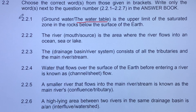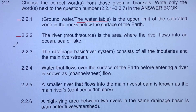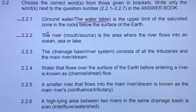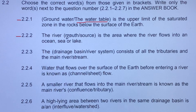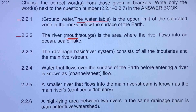Moving to 2.2.2: the river mouth or source is the area where the river flows into an ocean, sea, or lake. The correct answer is the river mouth. The river mouth is in the lower course — it's the last part of a river where the river enters the ocean.